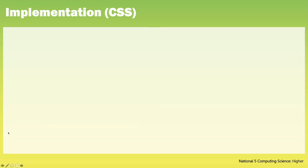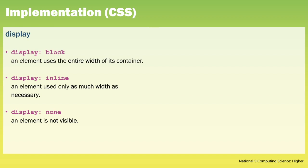At Higher the majority of the CSS that you will implement will control or modify the appearance and positioning of elements on a page. The display property can have one of three values. Block ensures that the element uses the entire width of its container — for example a div tag inside the main section. Inline means that the element will use only as much width as necessary, for example an image that is only 300 pixels wide will use only 300 pixels meaning the next element can appear right next to it. The none value will mean that the element will not be visible.